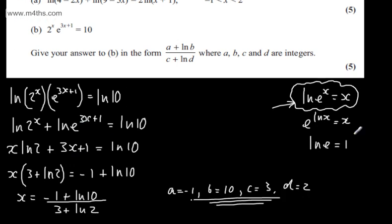If you want, you can also write the exponent as (3x plus 1) multiplied by ln(e) and show that equals 1 — you're welcome to do so. This solution is sufficient and is our final answer.